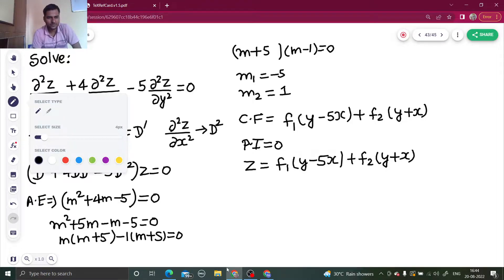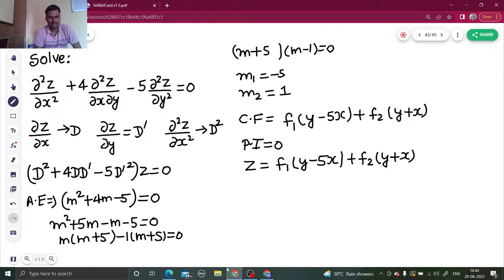So this becomes your final answer. Again, everything was smooth. First, write your given equation in terms of capital D and capital D dash. Then, in order to write your auxiliary equation, replace capital D by m and D dash by 1.